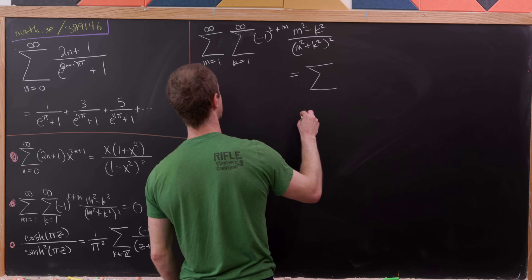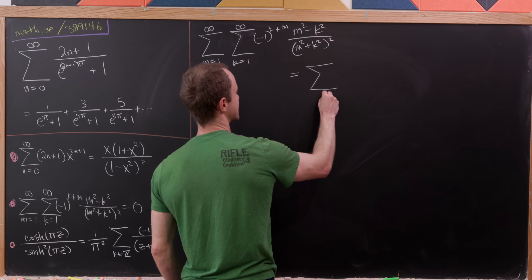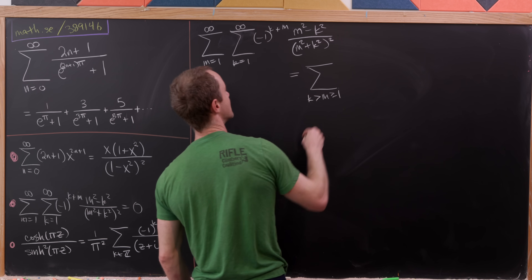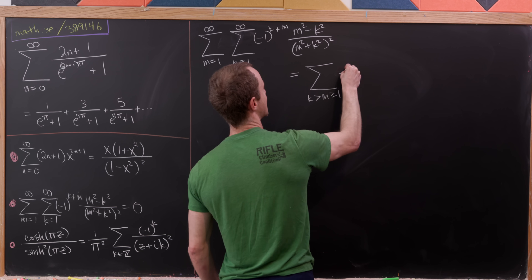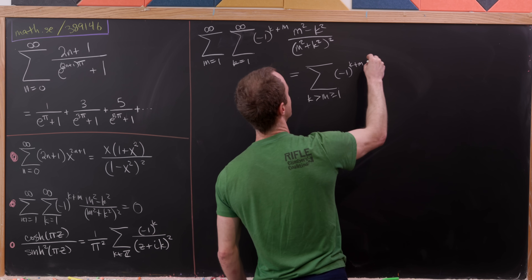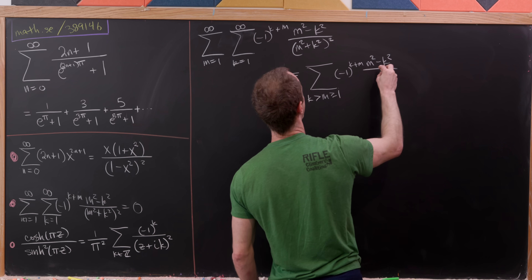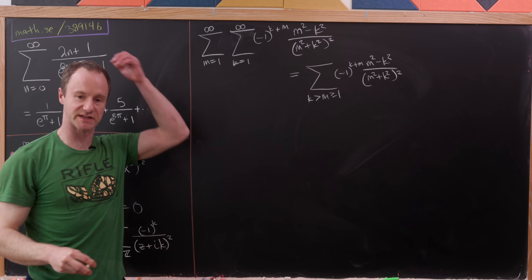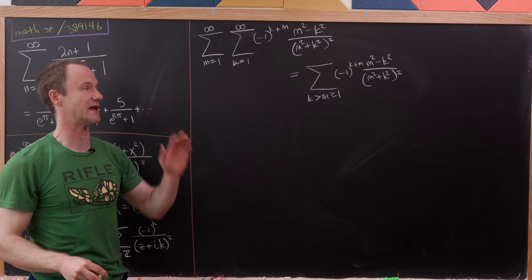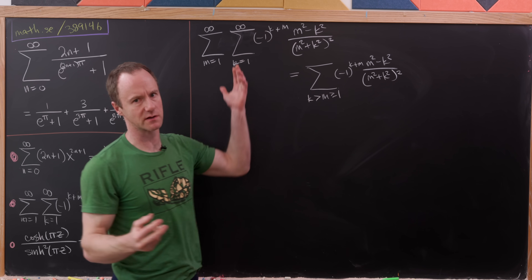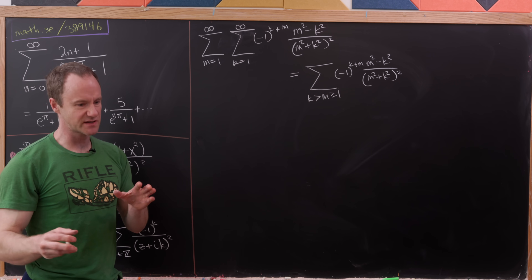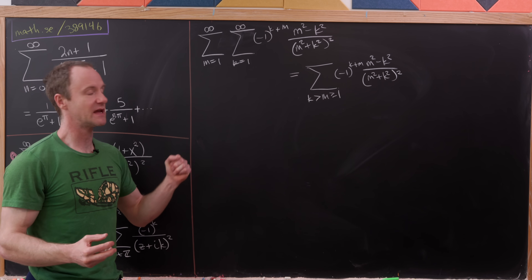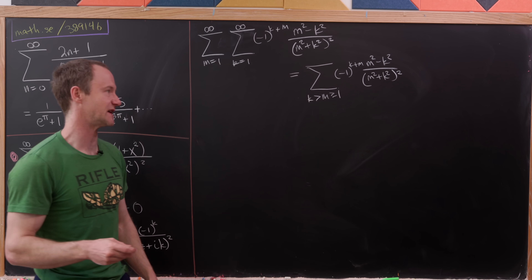I'm going to split this into the piece where m ≥ 1 and k is strictly bigger than m, giving (−1)^(k+m) times (m²−k²)/(m²+k²)². The middle case where k equals m clearly cancels immediately because m²−k² = 0. Then we have the case where k ≥ 1 and m is strictly bigger than k.